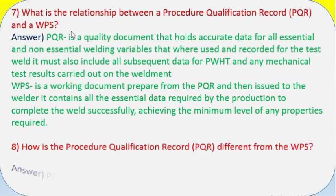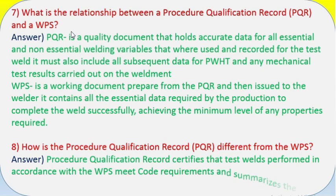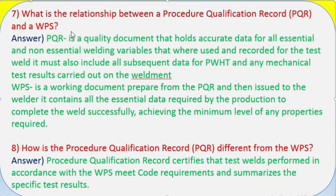WPS is a working document prepared from the PQR and then issued to the welder. It contains all the essential data required by the production to complete the weld successfully achieving the minimum level of any properties required. Question 8: How is the Procedure Qualification Record (PQR) different from the WPS?